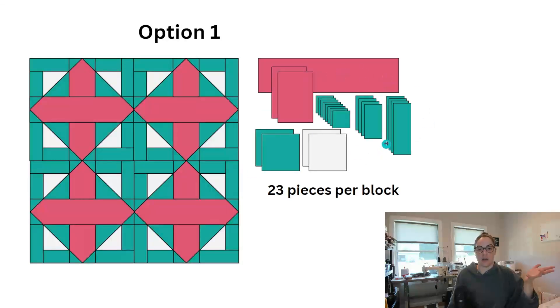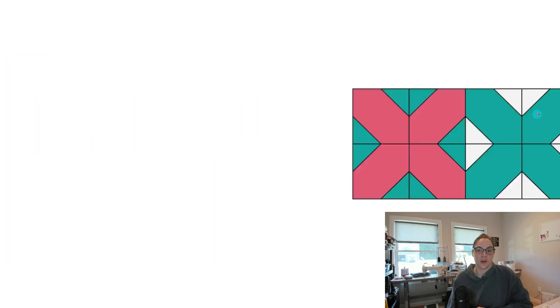If I did it this way, these are the pieces that I would need. These would be your stitch and flip corners, right? Rectangles in the corners, HSTs, and then my plus sign. It's 23 pieces total. And it's a bunch of different cuts, right? We're not just cutting a ton of squares of one size and squares of another size. A little bit more complicated than that, but 23 pieces per block. And we're making a fairly large block. All right, let's look at another option.